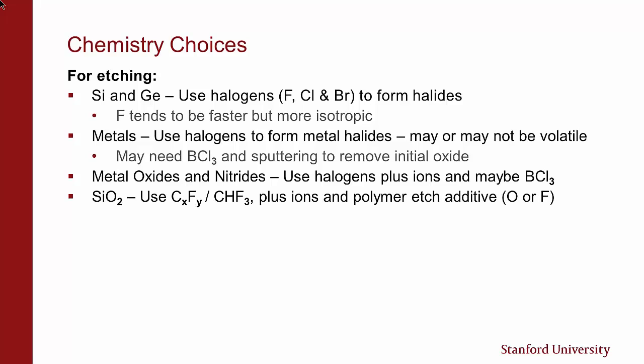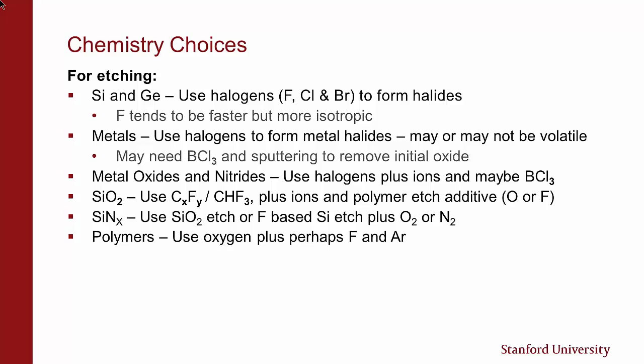Metal oxides and nitrides: use halogens again, plus ion bombardment and maybe BCl3. For silicon oxide, we tend to use fluorocarbon mixtures, plus maybe CHF3, with additives that will enhance or reduce deposition — oxygen and fluorine tend to remove the polymer and give better control. For nitrides, we can either use an oxide etch or a fluorine-based etch where we add oxygen or nitrogen. For polymers, we typically use oxygen, but we can add either argon or fluorine to help the process. Fluorine is added when you have a tough, cross-linked polymer.